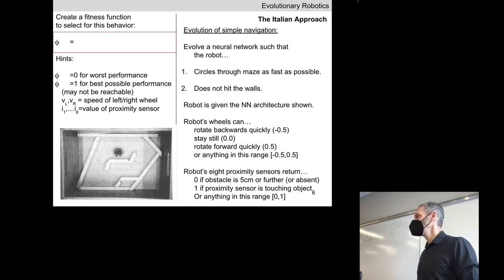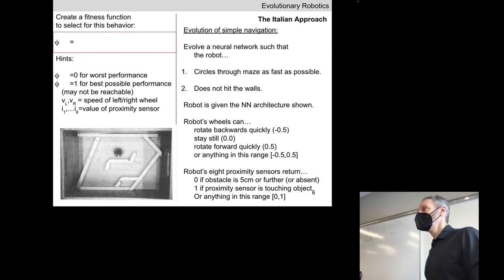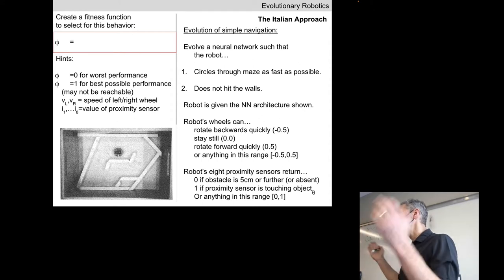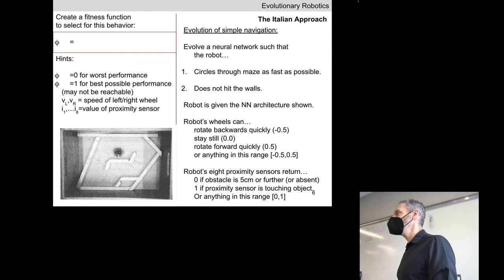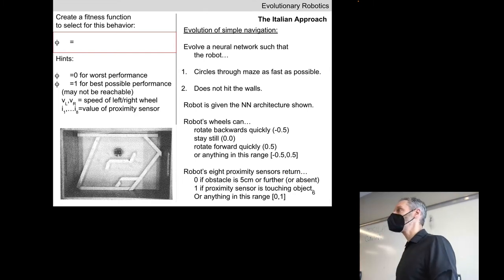How do we write a fitness function that, given to an evolutionary algorithm, will evolve neural networks causing the robot to race around the maze faster and faster without crashing into walls? First, we don't want the robot to sit still, so we make use of VL and VR. We could plug in VL times VR, but that would select for robots spinning both wheels forward as quickly as possible, causing crashes. That's not what we want.